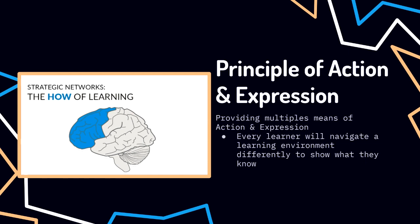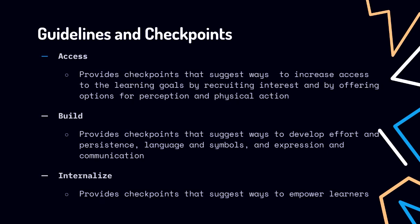The principle of action and expression focuses on the different ways in which learners can navigate a learning environment and show what they know. For example, there may be some learners who are able to express themselves really well in written text, but they may struggle with speech or other types of expression. Keeping in mind that there are different ways learners will be able to express themselves is really important. There are also three guidelines — Access, Build, and Internalize — and every guideline has corresponding checkpoints to keep you on track as you're applying the principles.